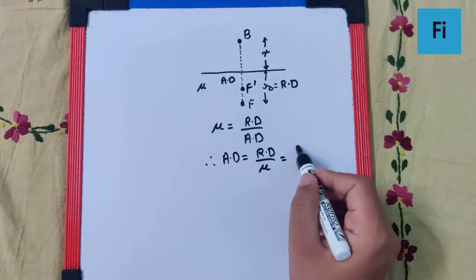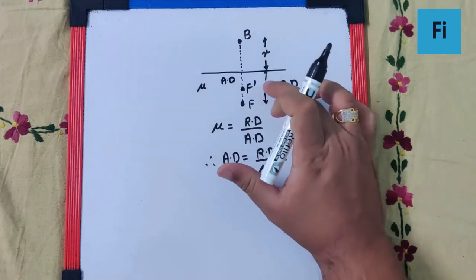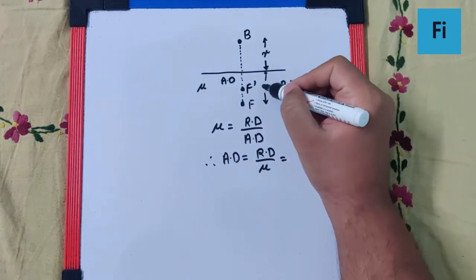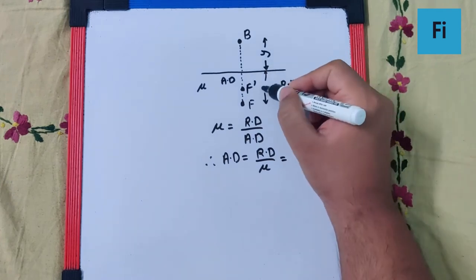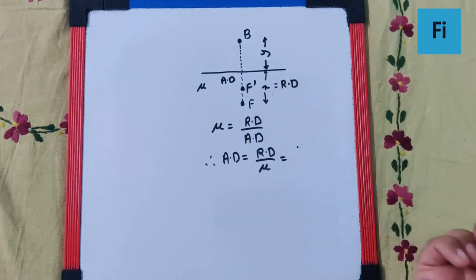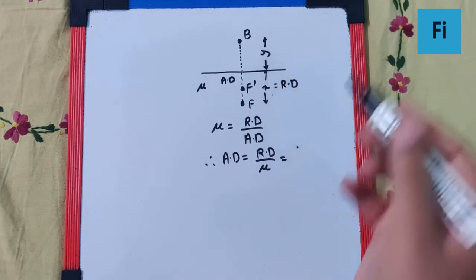Oh, I made a small mistake. The bird is at height y and the fish is at depth x. Sorry, my bad. The depth of the fish is x and this is y. So if I substitute the symbols, this will be x upon mu.